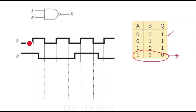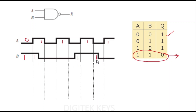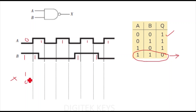Let's start solving. A is 0 here, and this portion is 1. Let's find where A is 1 — this is 1, this is 1, and this is 1. Now find where B is 1 — B is 1 from here to here, and 1 from here to here. So for the 0,1 combination, output X is 1. This first segment gives output 1.